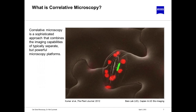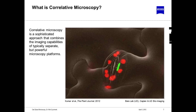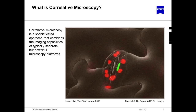So let's begin — what is correlative microscopy? I would define it as a sophisticated approach that combines the imaging capabilities of typically separate but powerful microscopy platforms, often including, but not limited to, optical and electron microscopy. Many of you may already be familiar with the term CLEM, which stands for correlative light and electron microscopy, which is commonly used in the biosciences field and will be the primary focus of this webinar. Today's webinar will primarily focus on sharing my experiences over the last several years to shorten your learning curve if you are considering applying correlative microscopy in your own laboratory.